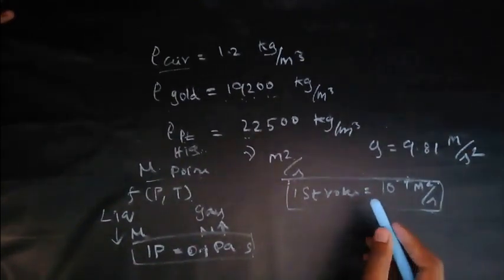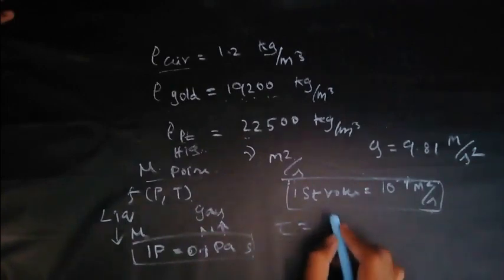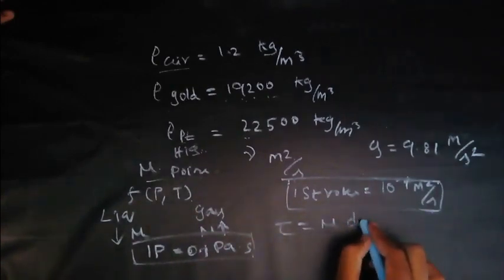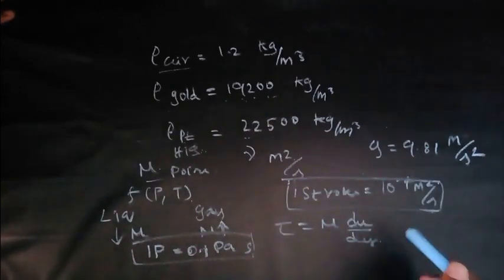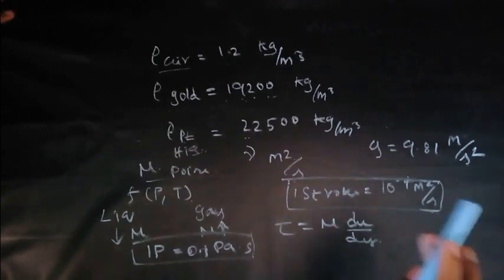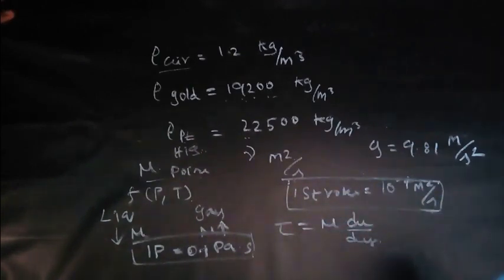So that's it. Tau is equal to mu into du by dy. Viscosity at rest, it does not matter. So also make note of that point. It is very important; you can get it in any question like that.